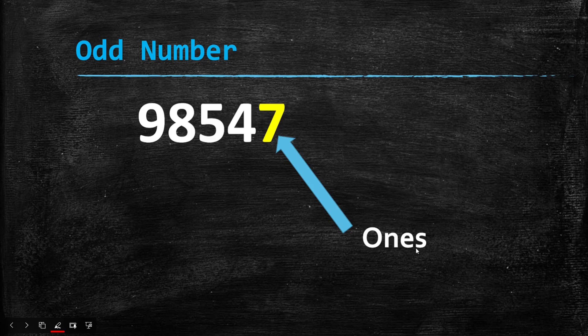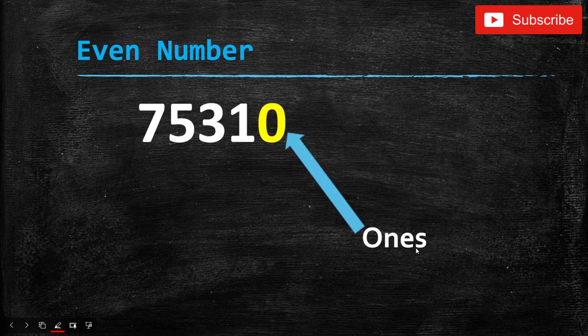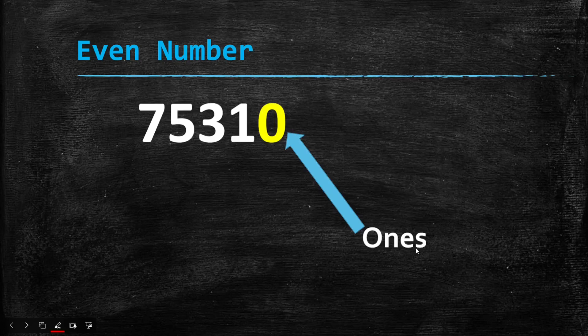Now for a large digit even number: 75,310 — the arrow is pointing at the ones place, which is 0, and 0 is an even number. Since 0 is an even number, 75,310 is an even number. It is very simple.